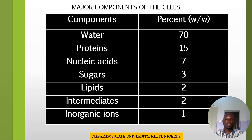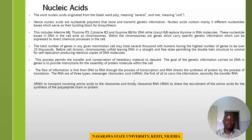These are the percentages. The table here shows the percentage components of the major components of the cell. Water constitutes 70%, proteins 18%, nucleic acid 7%, sugars 3%, lipids 2%, intermediates 2%, and inorganic ions 1%. Now we are going to be looking at the macromolecules one after the other.